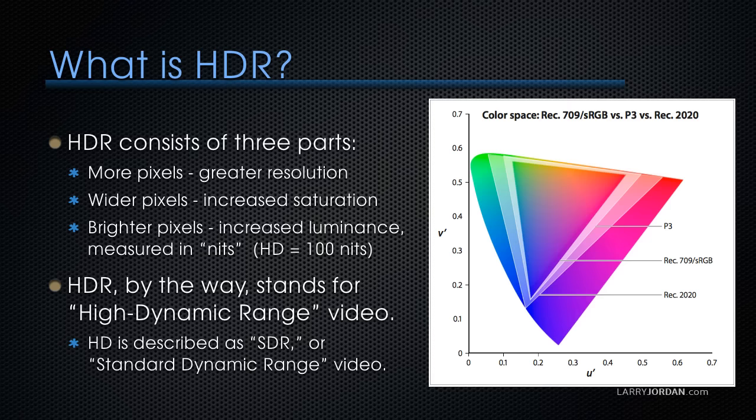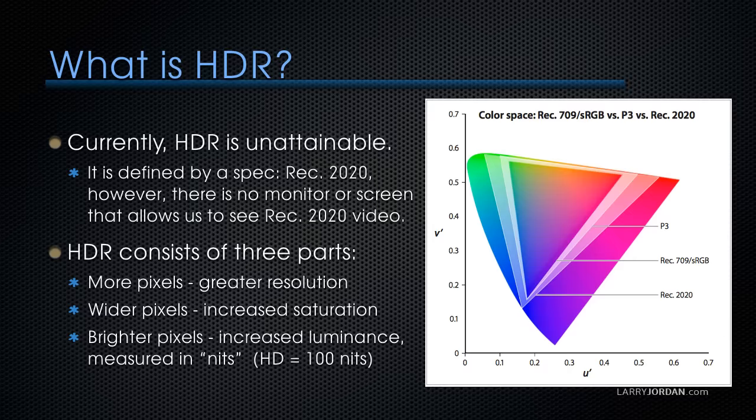HDR, when we hit the spec, is going to be at least 1,000 nits — 10 times brighter. To give you a comparison, daylight is in the hundreds of thousands to millions of nits, so we're not going to be as bright as daylight any time in the near future. But in order for something to be HDR, it needs to have greater resolution, increased saturation, and increased luminance.